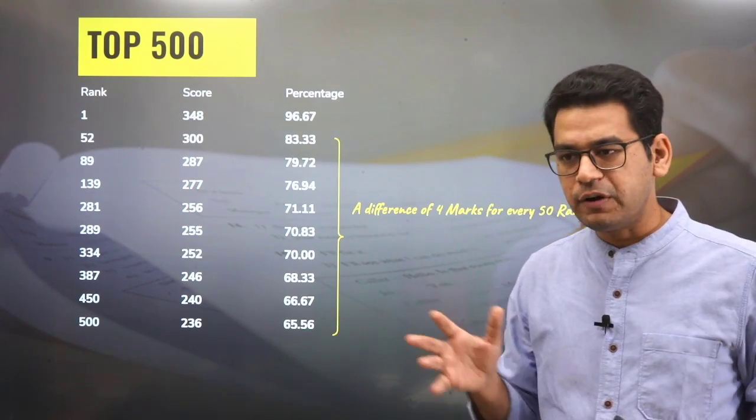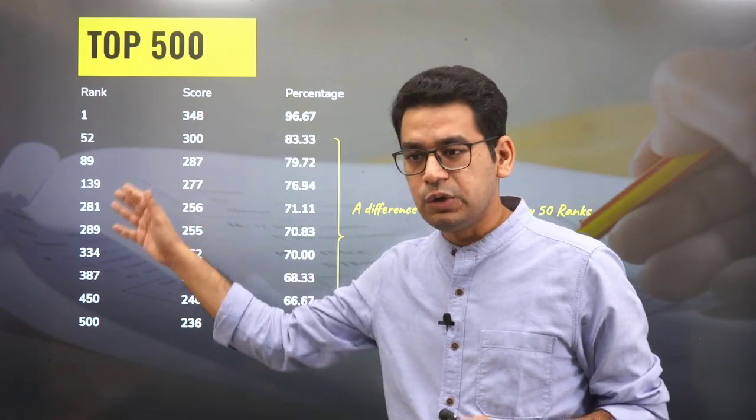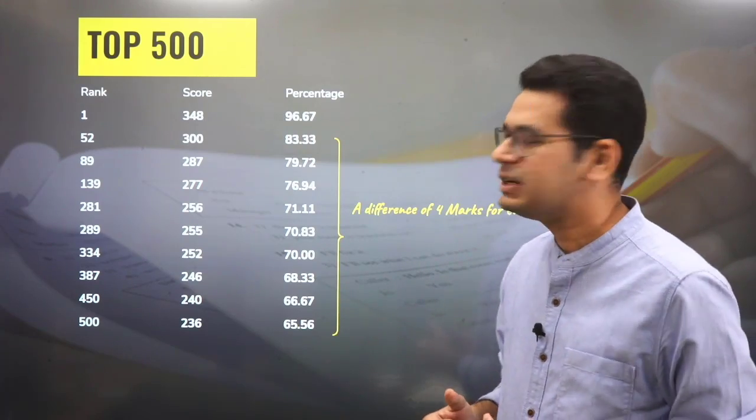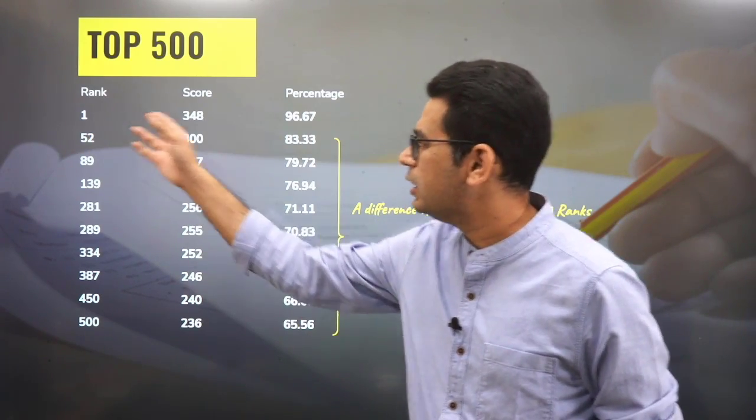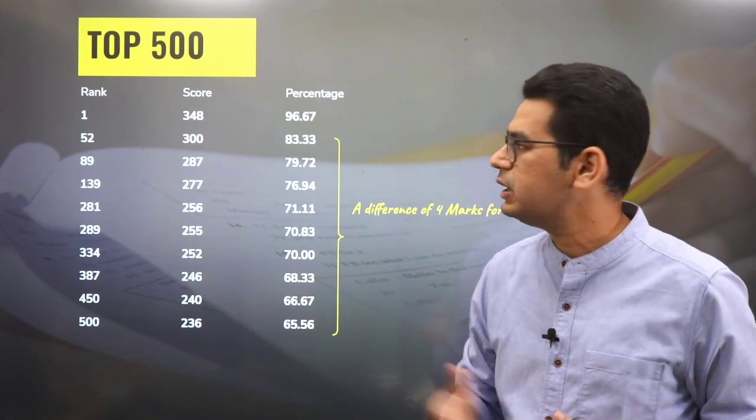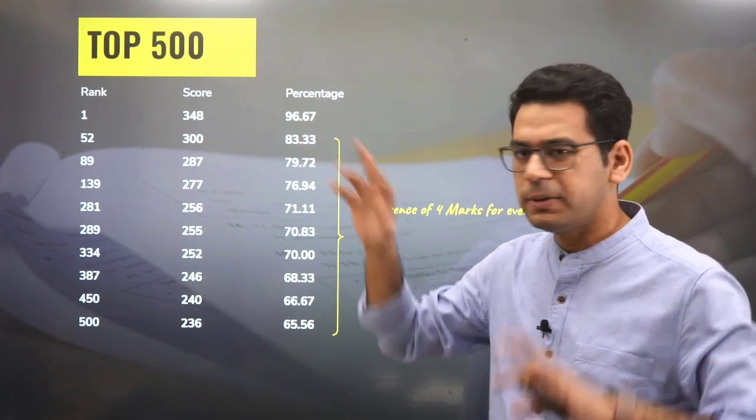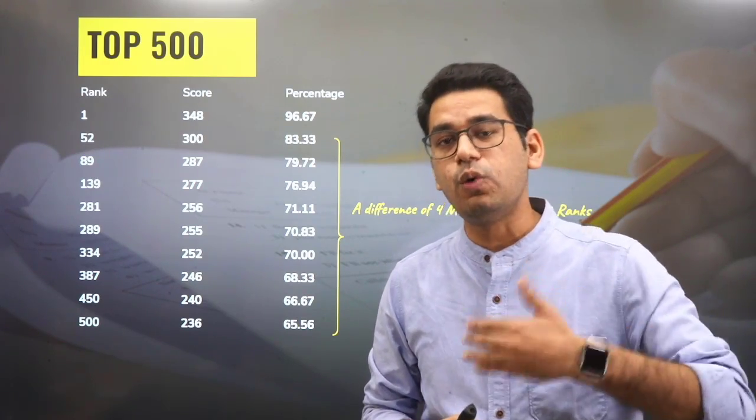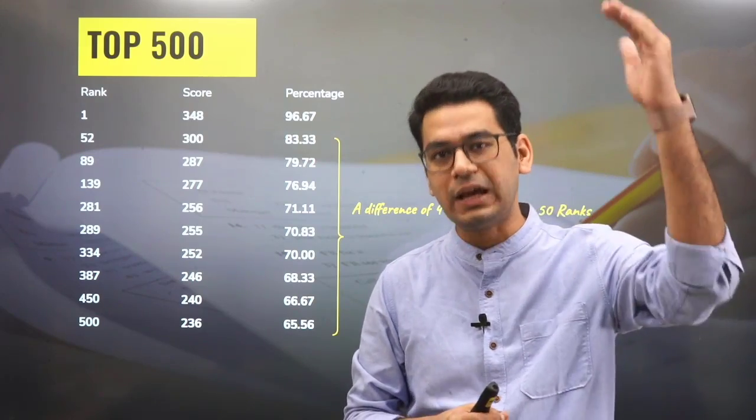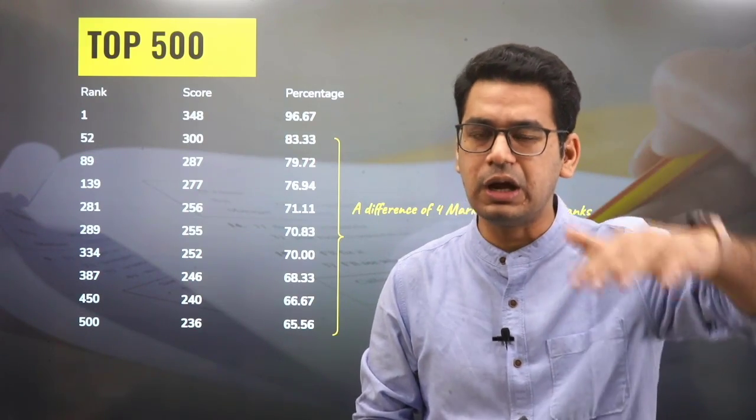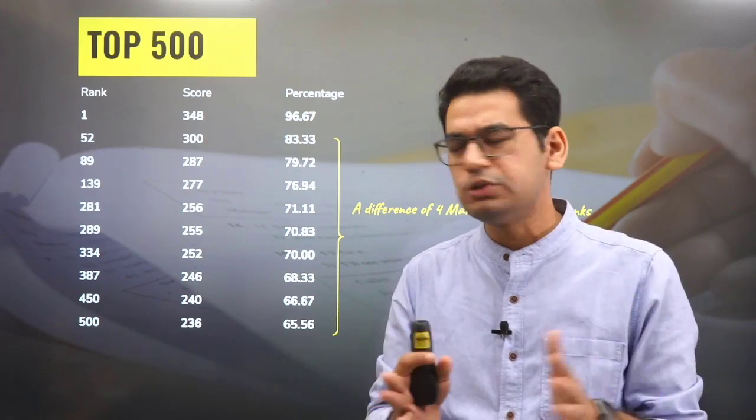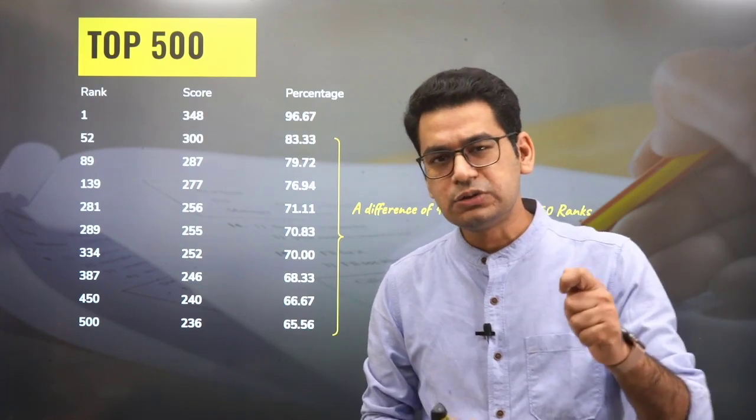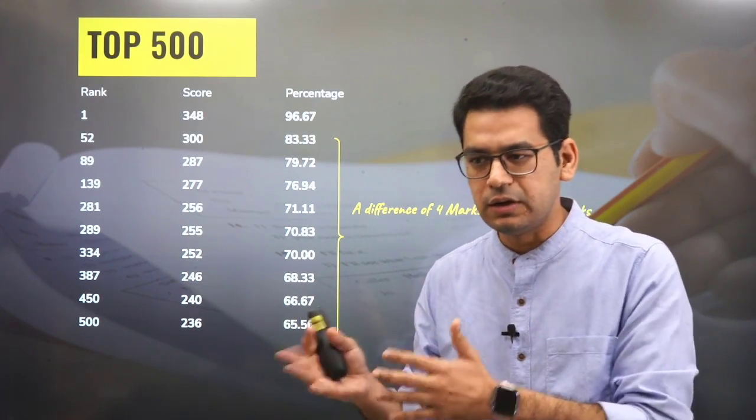So if we talk about the top 500 rank, these are the stats given to us by students. There might be a difference of one or two marks, please do not shout at us for that. Rank one, you all know, was got by Mridul at 348 with a whopping percentage of 96.67. This makes you think that overall marks in the paper must have been very high, but you will be surprised to know that has not changed if we are talking about ranks which are under 1000.